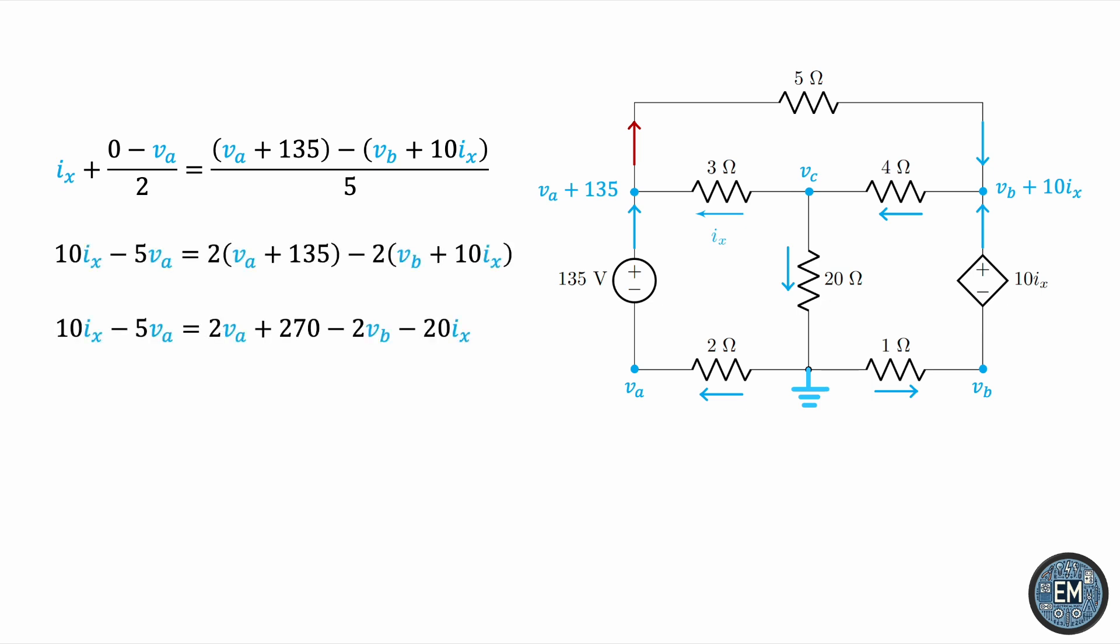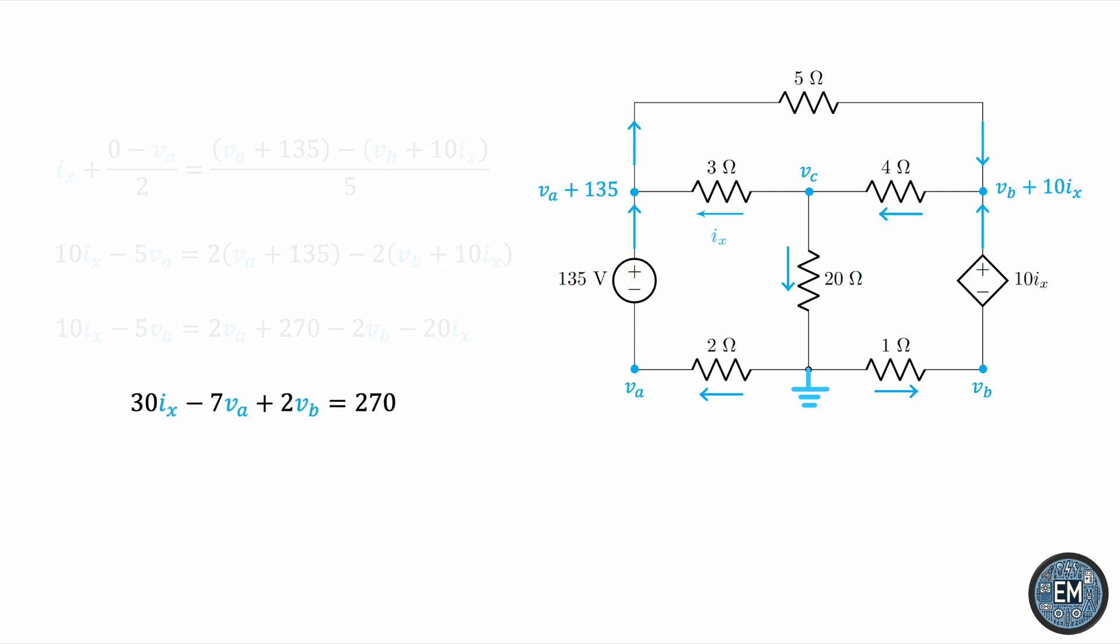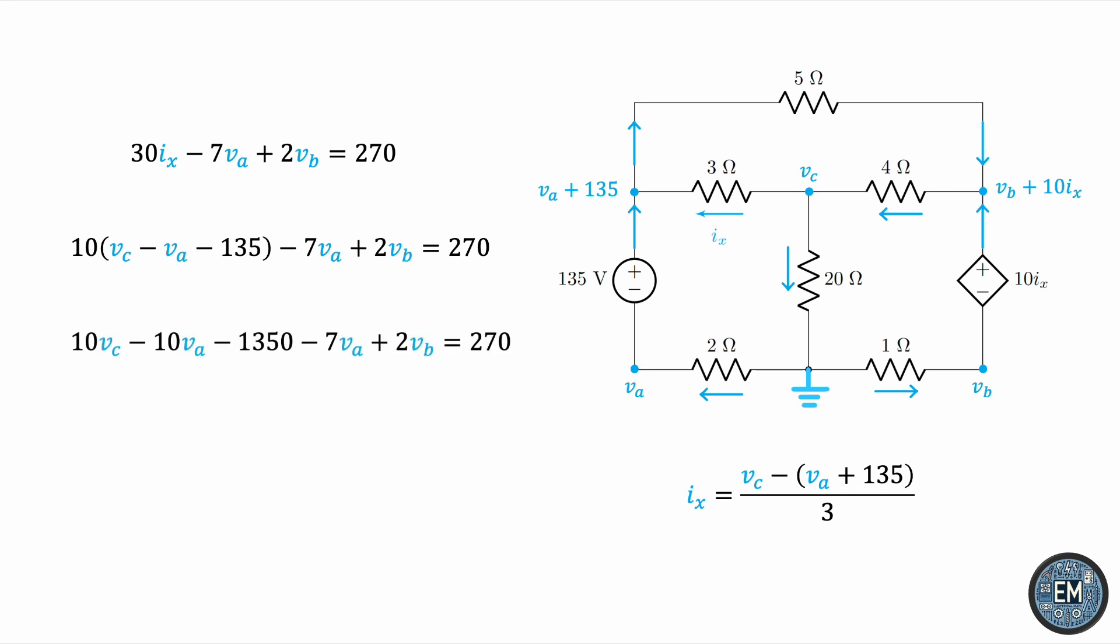We can expand the brackets. We can take all the unknowns to one side and leave the constant in the other side. 10IX plus 20IX is 30IX. Negative 5 VA, negative 2 VA is negative 7 VA. So now we have this equation in the voltages VA and VB, but this IX is an extra unknown that we have to get rid of, and this is definitely possible. Let's look at the circuit again. IX is the current going through the 3-ohm resistor. So, we can express it in terms of the voltages as follows. VC minus VA plus 135 all over 3. Replacing IX by its equivalent in terms of the voltages allows us to solve for an equation involving only VA, VB, and VC. There's some algebra required, but it's easy. So this is the first equation in the three voltages.